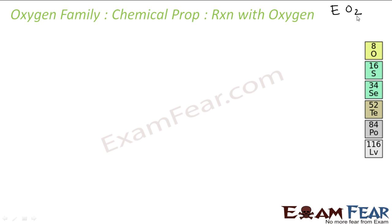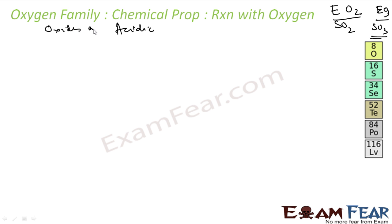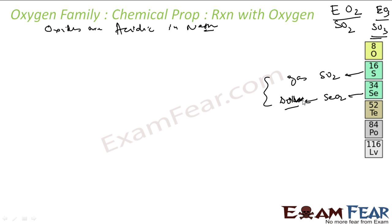Now let's talk about reactions with oxygen. Group 16 elements typically form oxides EO₂ or EO₃. An example of EO₂ is SO₂ and EO₃ is SO₃. These oxides are acidic in nature. The physical properties may change — for example, SO₂ is a gas. The reducing property also decreases down the group; SO₂ actually has reducing property, so SeO₂ is oxidized.